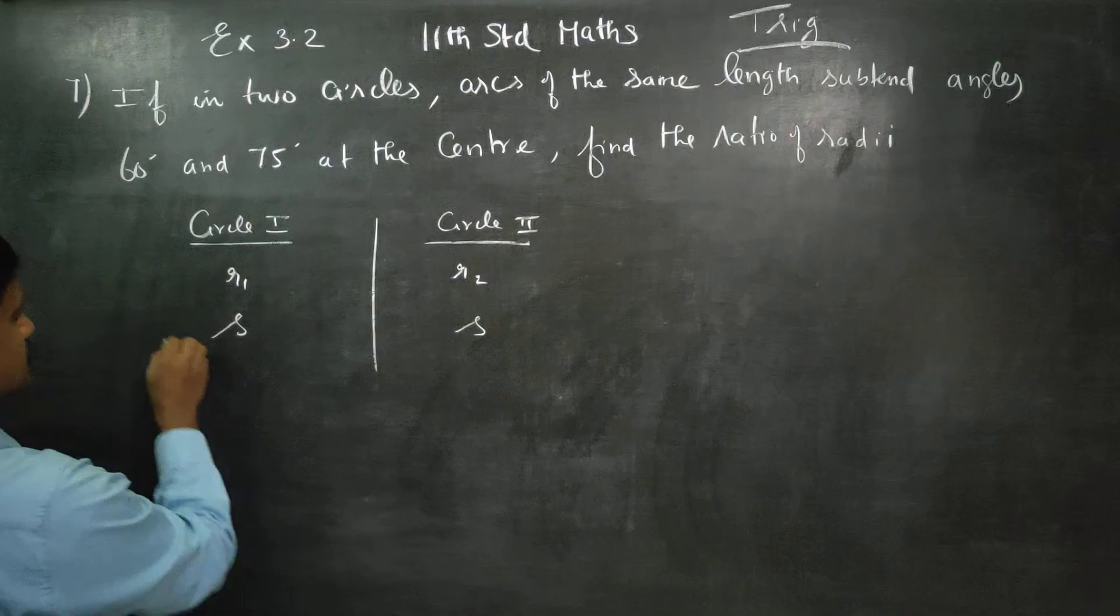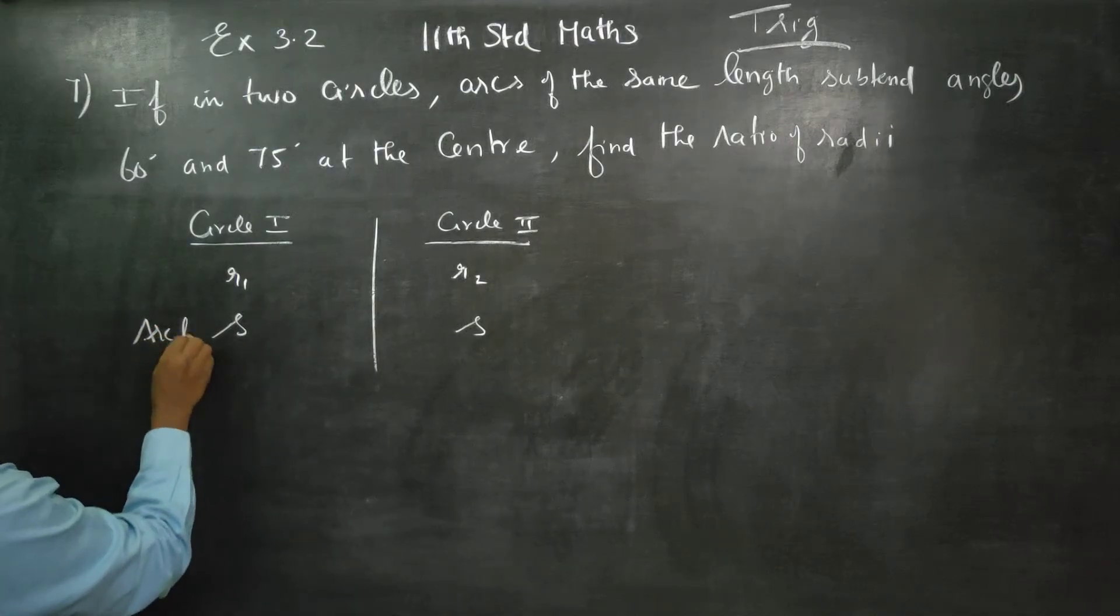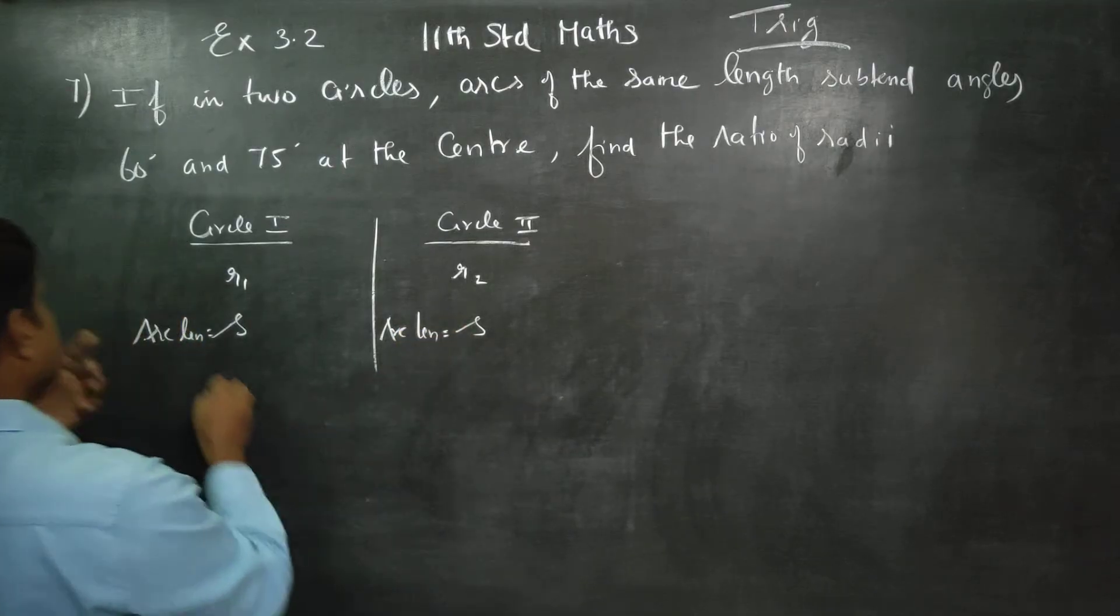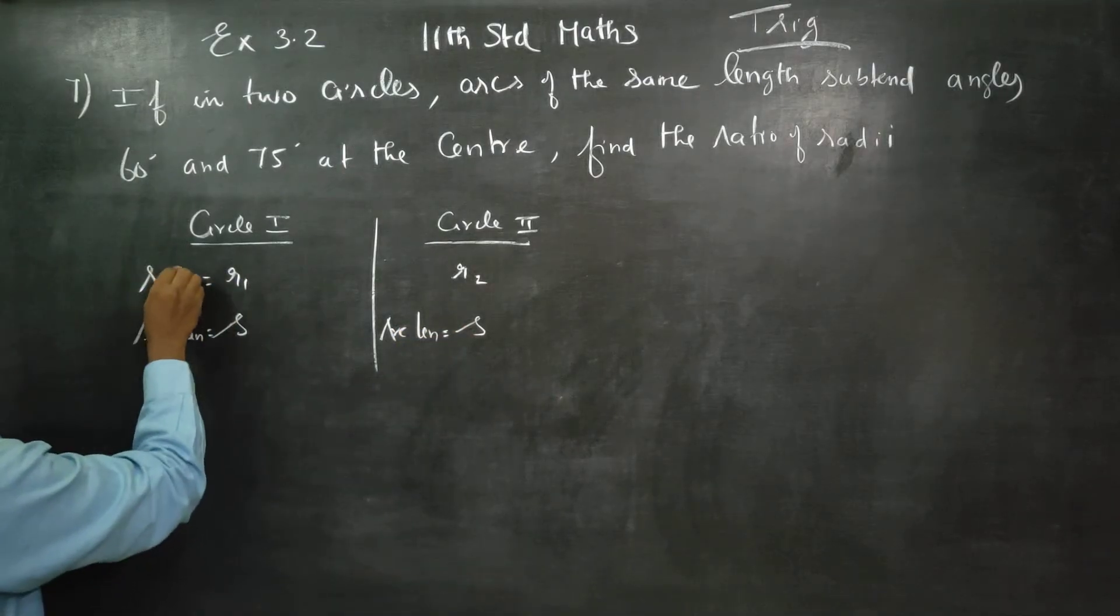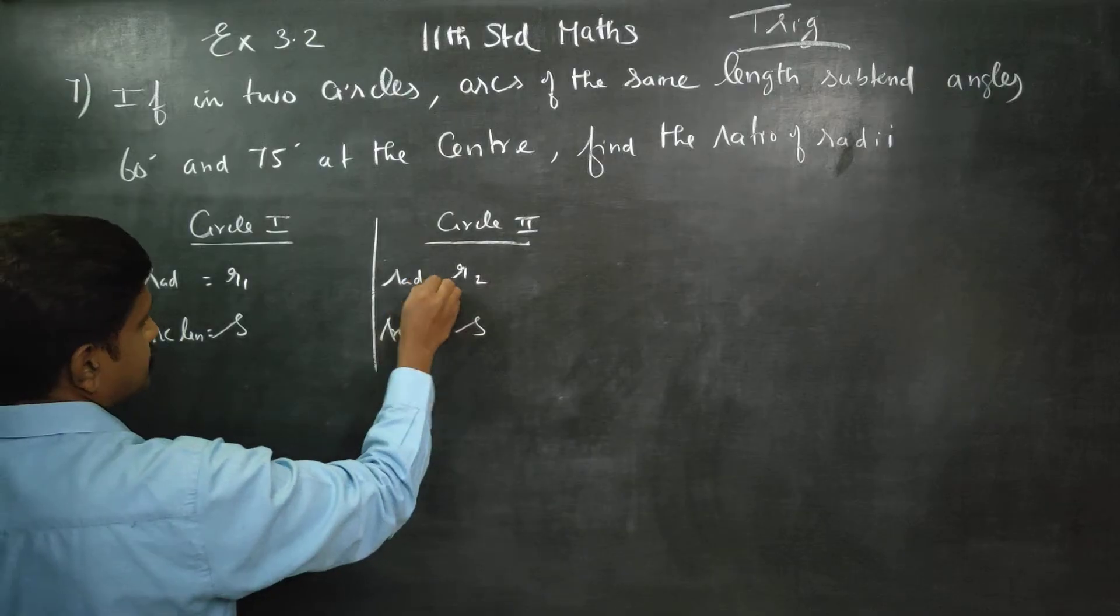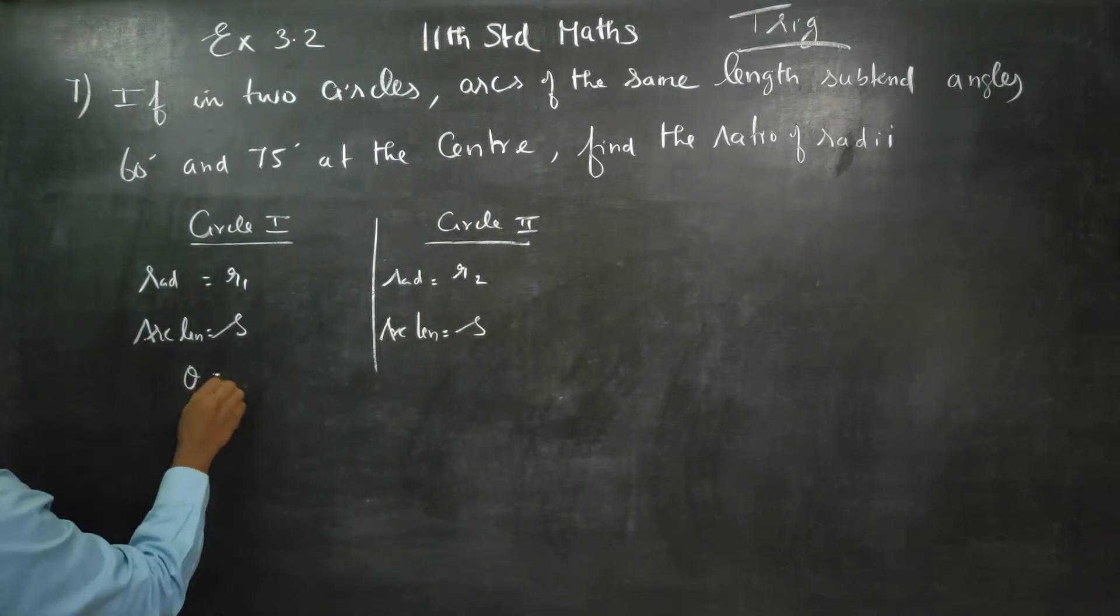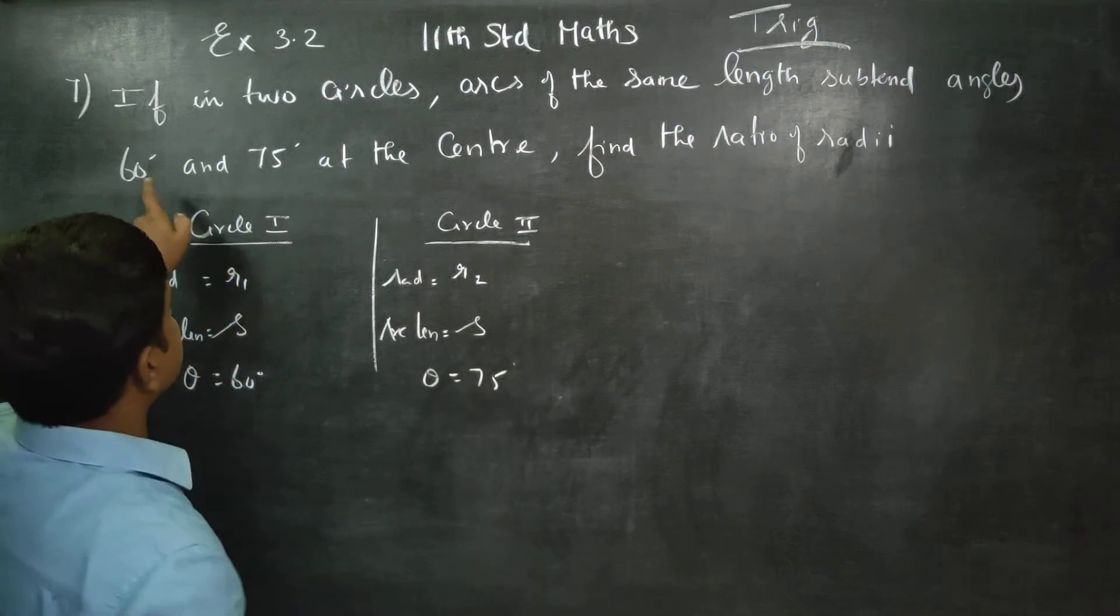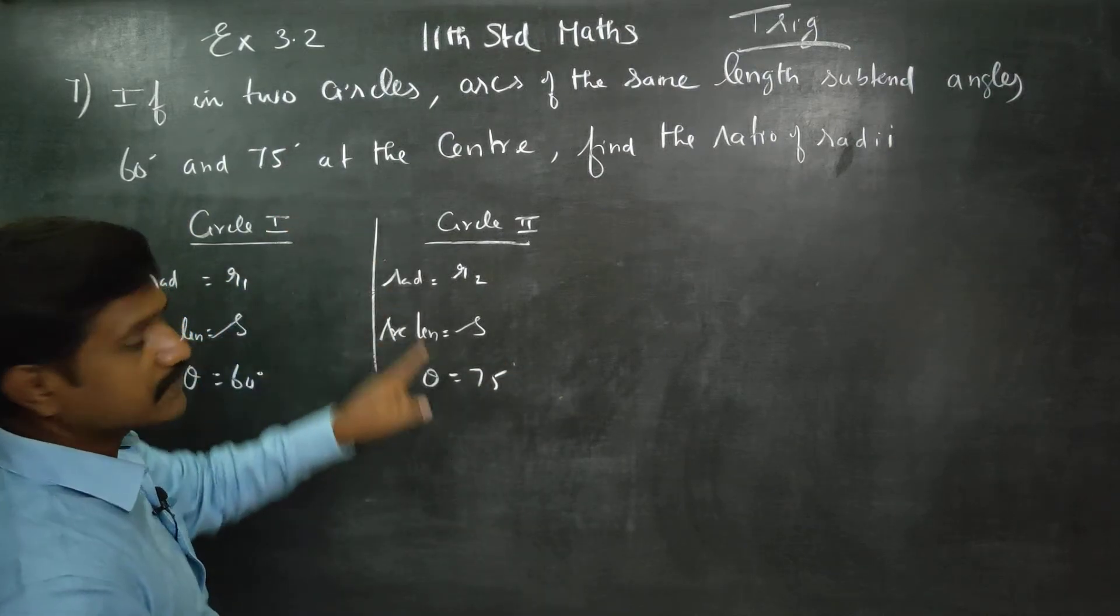This is my arc length. This is my arc length. This is my radius. This is my radius. Theta is 60 degrees for one circle. Theta is 75 degrees for the other circle.